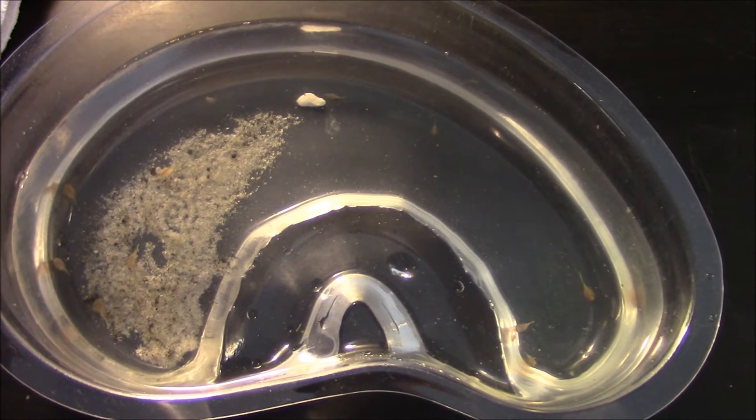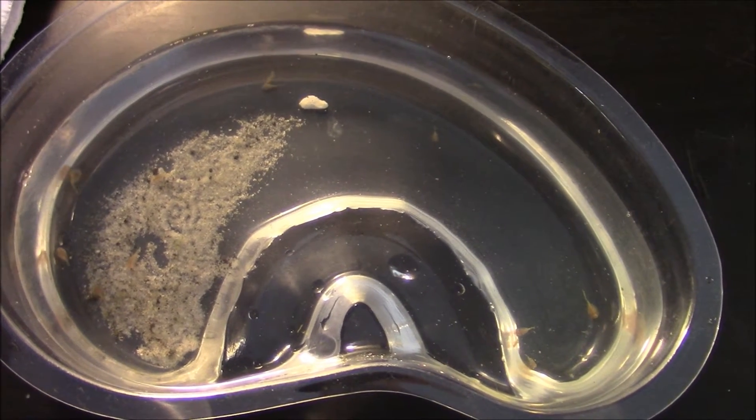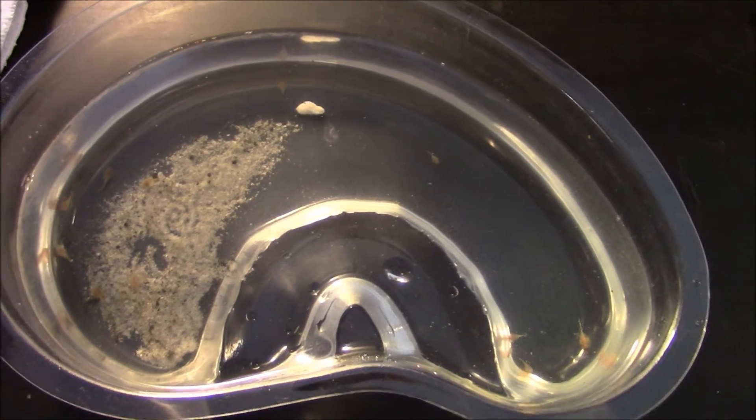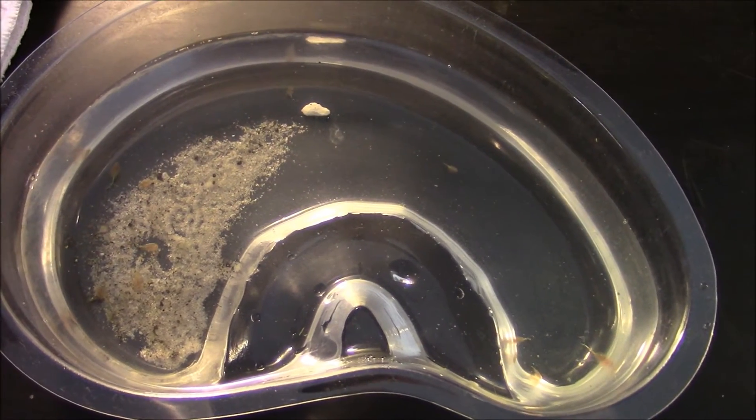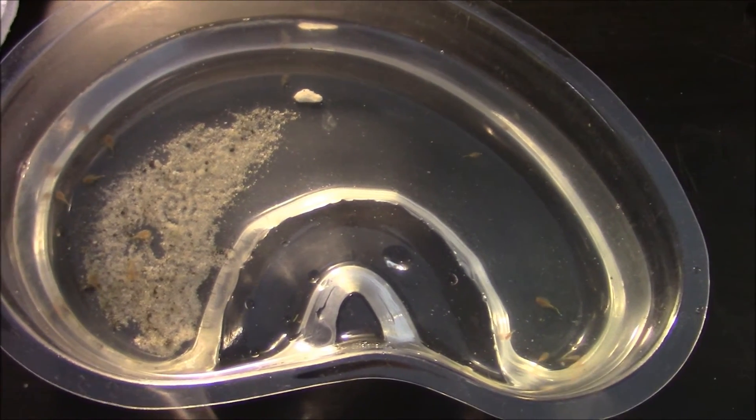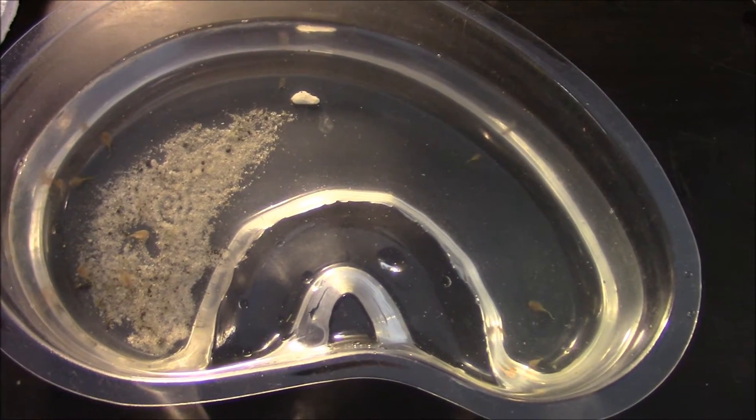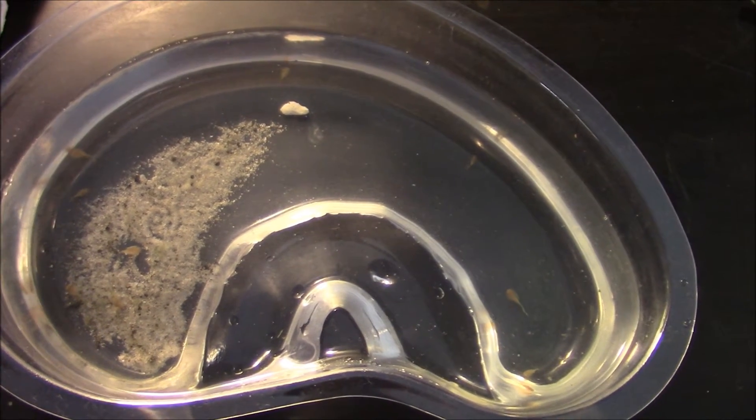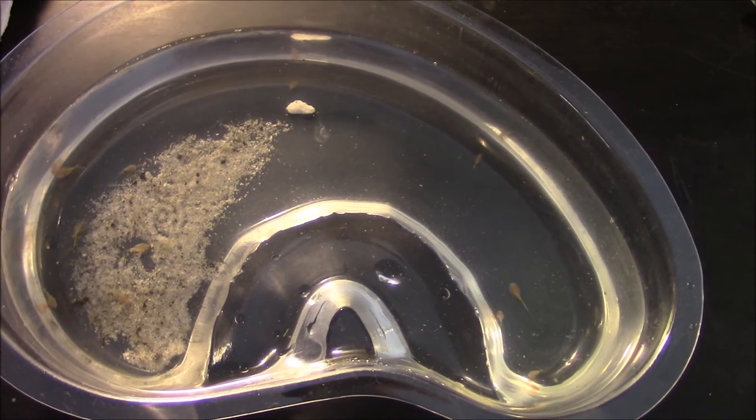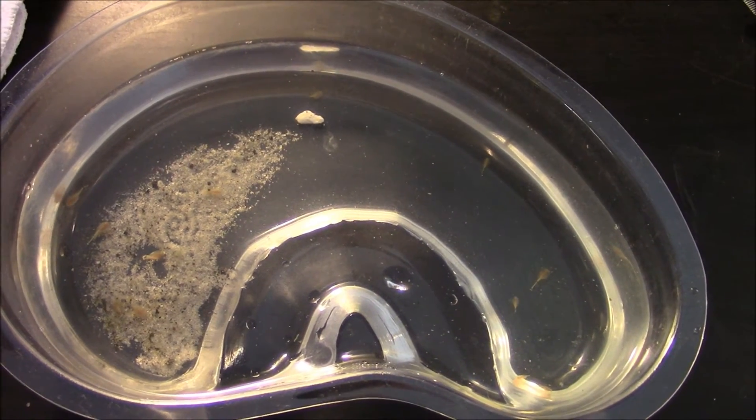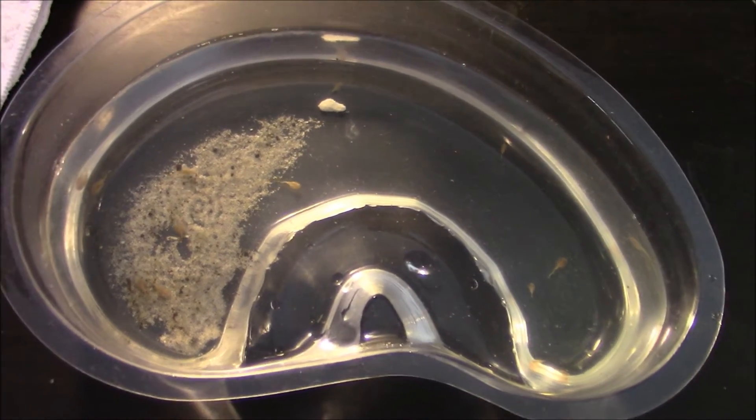As soon as they hatch, however, I use tap water to fill up the container. I use dechlorinated tap water, so I treat the tap water with dechlorinator and then use that. The reason for that is that there's no minerals in distilled water, and the triops need minerals to properly form their shells or exoskeleton. So that's why I like to use tap water.